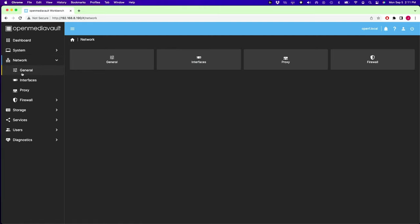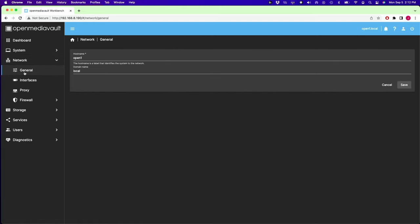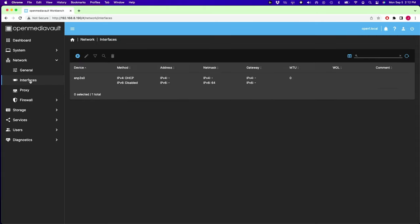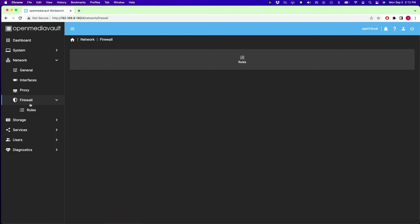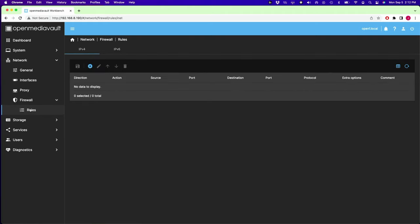We're going to go to network, click on general. This is the name of our host. If we want to change it here, we type in a new name, click save. Interfaces shows us the information about our network interfaces. Proxy, if we want to establish a proxy and firewall, we would set up firewall rules here.